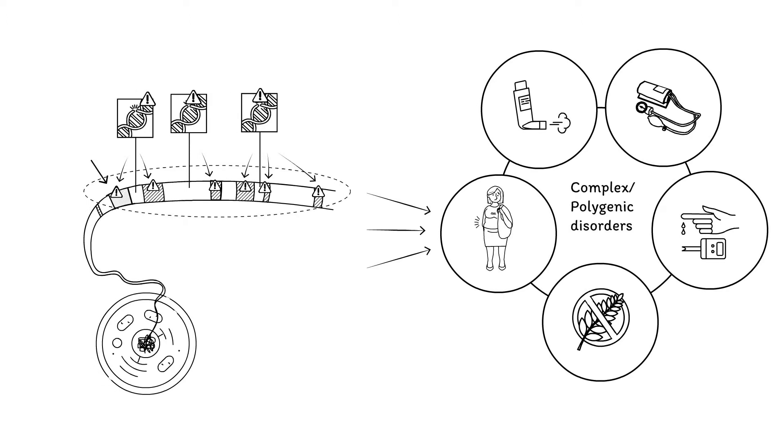The presence or absence of one risk variant is thus not conclusive for developing a complex disorder. In fact, there is no set number or combination of disease-linked variants that will lead to a complex disorder. Therefore, when discussing complex disorders, we talk about genetic predisposition that increases or decreases your likelihood of becoming ill.